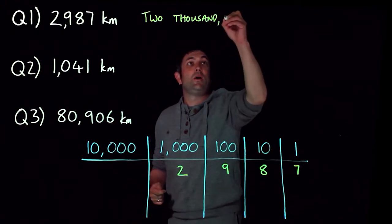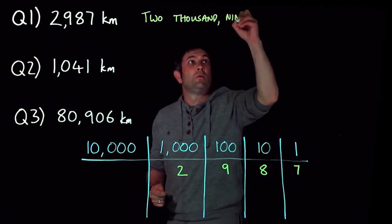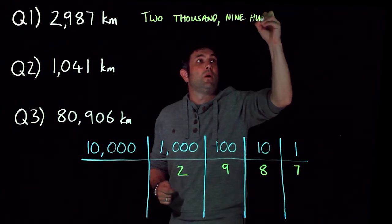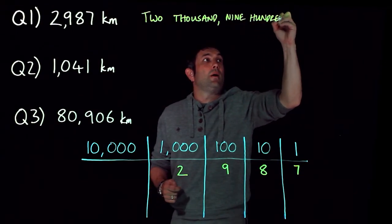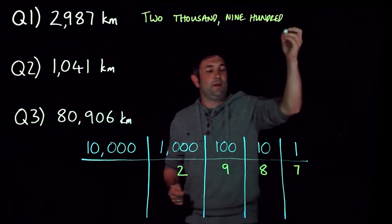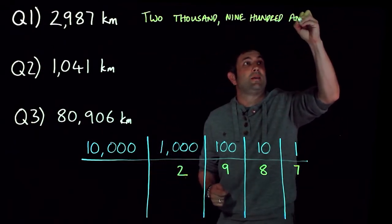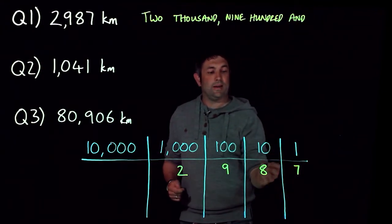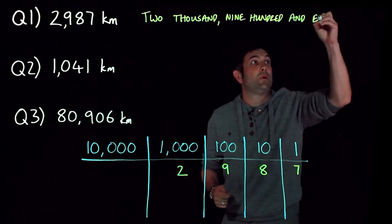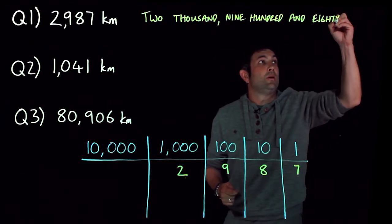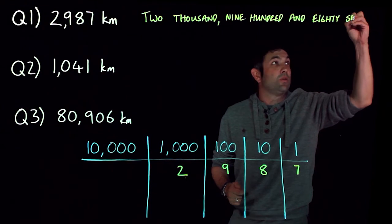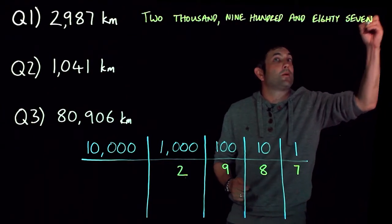That's going to be two thousand, and then I'm going to put a comma there, nine hundred. Between hundred and the tens we normally put an 'and.' Eight tens we call eighty, and then we've got the seven at the end. Quite a long number, but there you go.